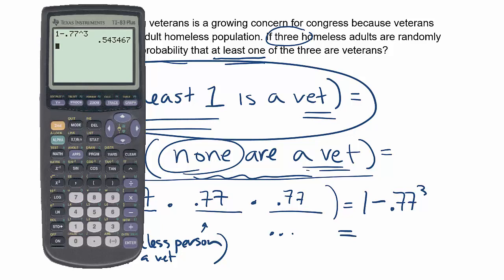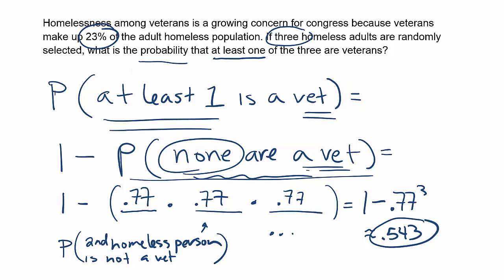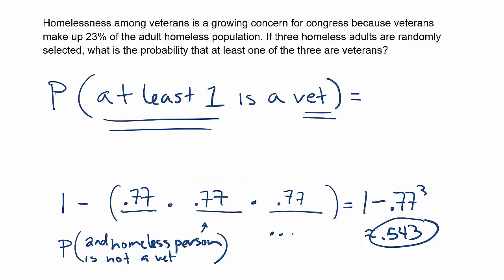So the answer is 54.3%, or approximately 0.543. Now, why do we have to solve it this way? Why is that approach best? Well, first of all, if you have that key phrase 'probability of at least one' in your problem, you should definitely use this approach. The reason it's useful is because there are lots of ways to have at least one vet. Let's sketch this out to think about how you would get that.